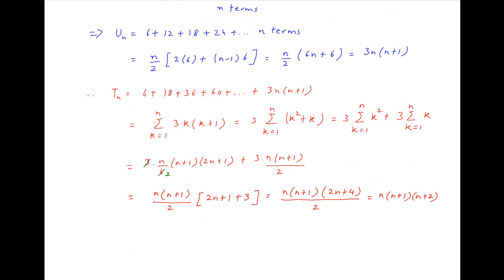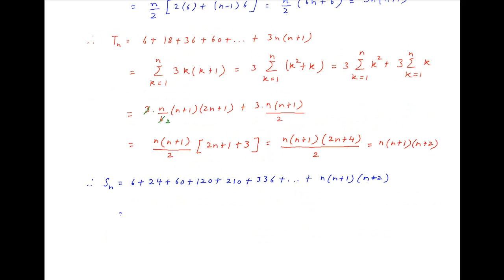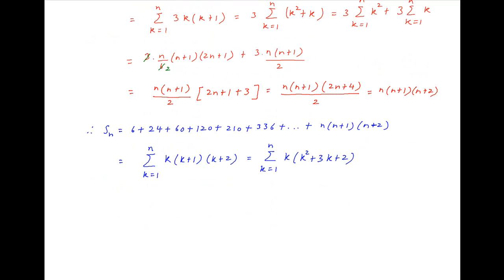Now Tn is the nth term in the series for Sn. Therefore Sn is equal to 6 plus 24 plus 60 plus 120 plus 210 plus 336 plus and so on, and the nth term as determined above is equal to n times n plus 1 times n plus 2. And this can be written as the summation k going from 1 to n of k times k plus 1 times k plus 2, which equals the summation of k times k squared plus 3k plus 2, which is equal to the summation k going from 1 to n of k cubed plus 3k squared plus 2k.